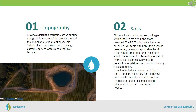Item 1 addresses topography. We ask that you provide a detailed description of the existing topographic features of the site and its immediate surrounding areas. This includes land cover, existing structures, drainage patterns, surface waters, and other key features.